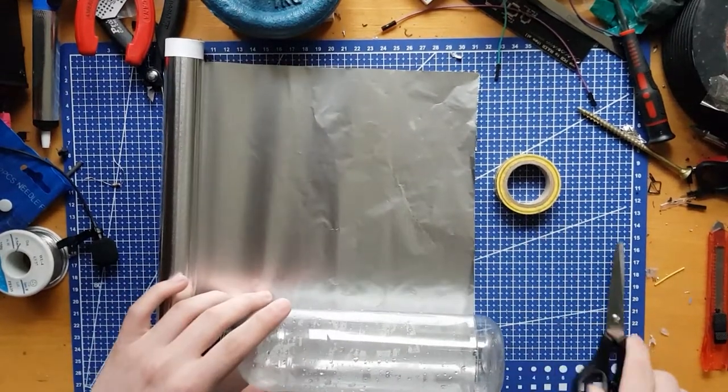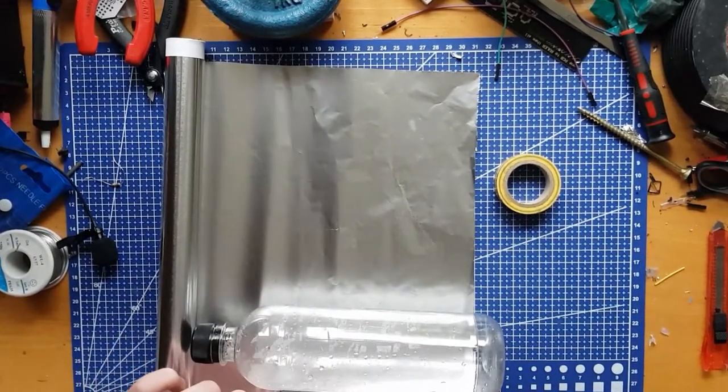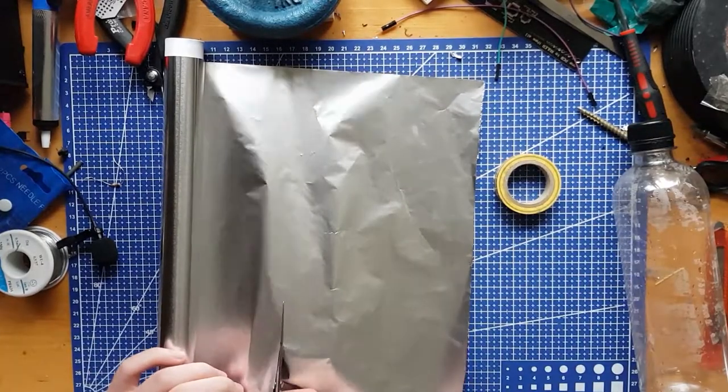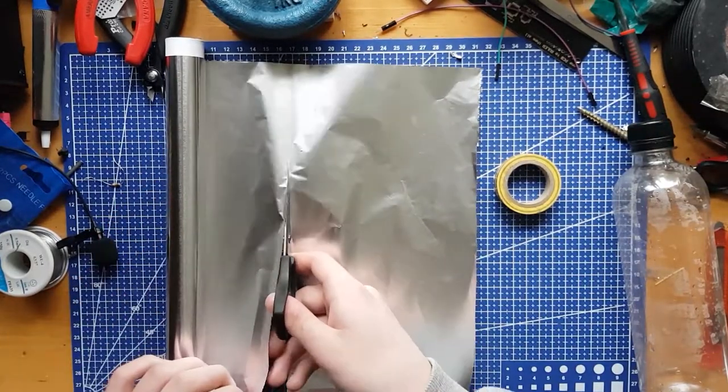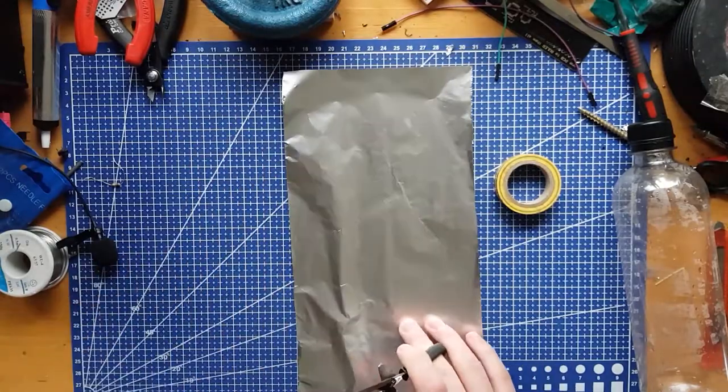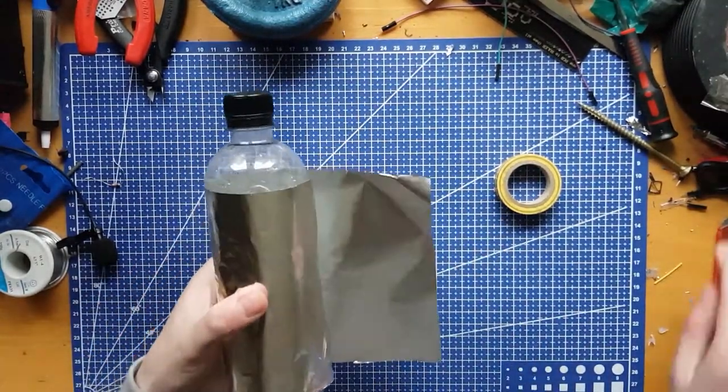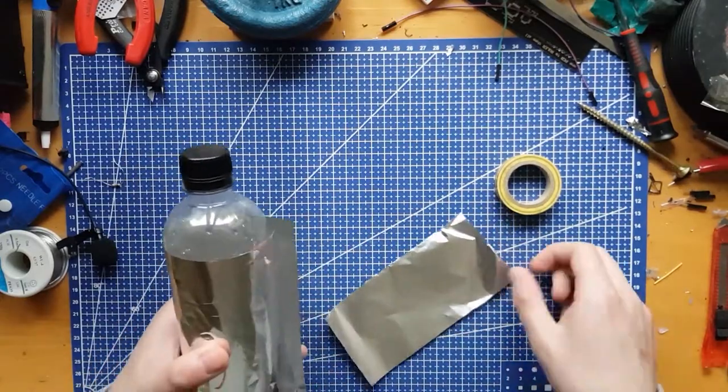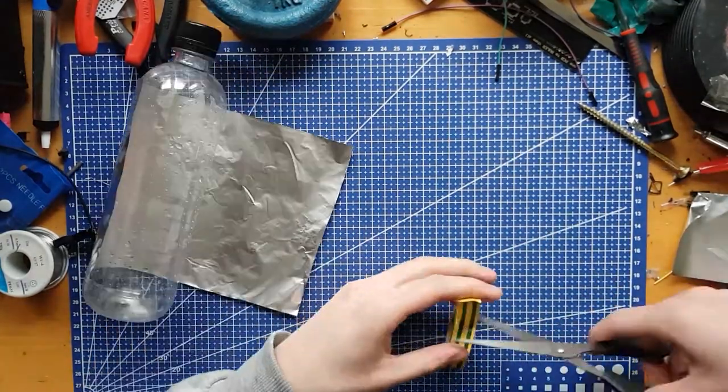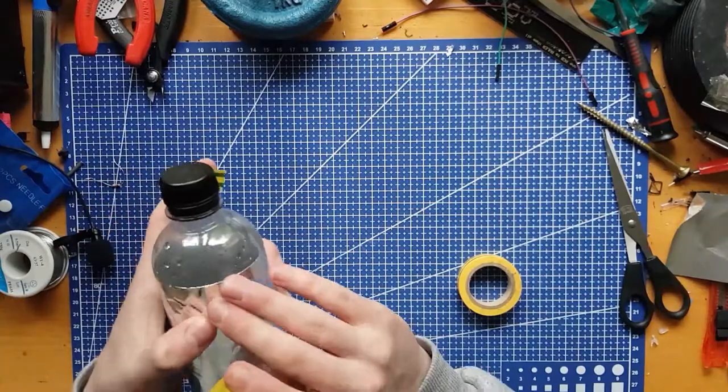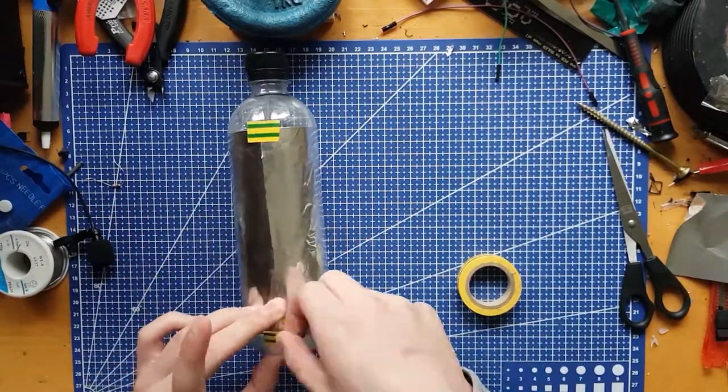Now cut the aluminum foil and roll it around the outer surface of the bottle. It does not have to look super good. You can tape the sides of aluminum foil with duct tape.